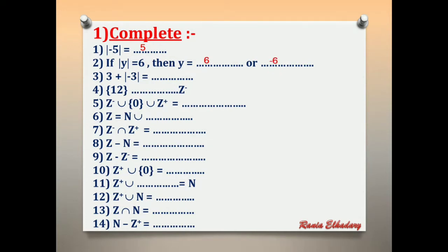Number 3: 3 plus absolute of negative 3 equals what? First, we should solve the absolute of negative 3. Absolute of negative 3 equals 3. Then 3 plus 3 equals 6.